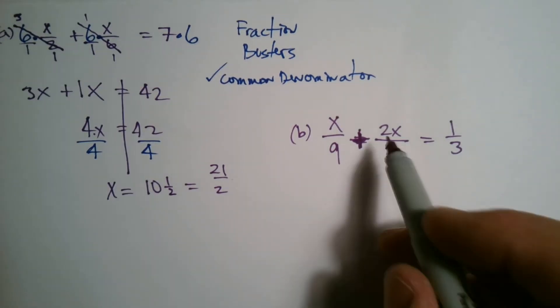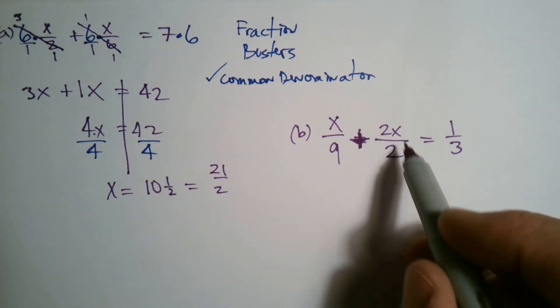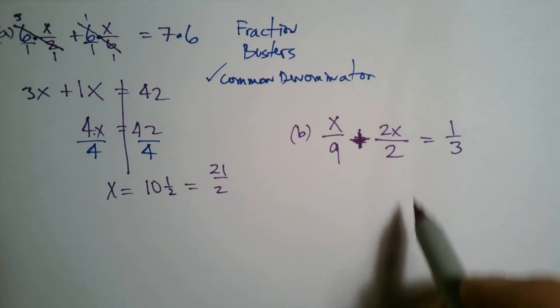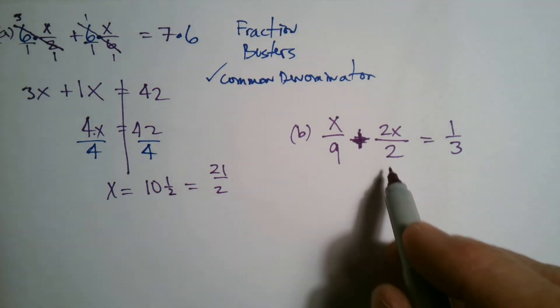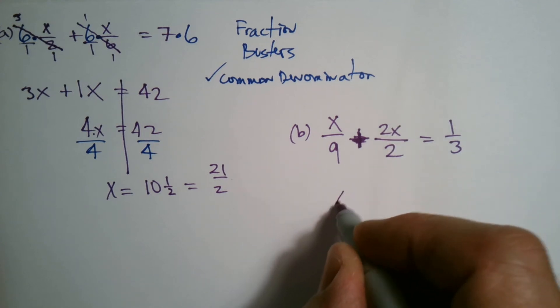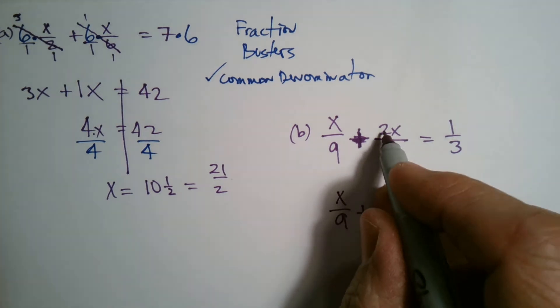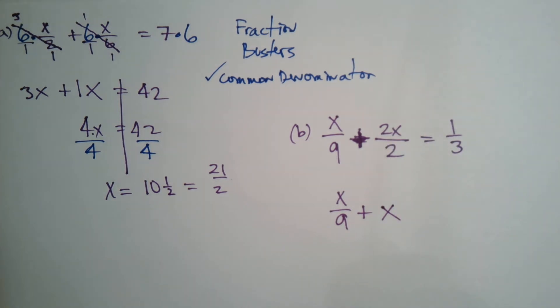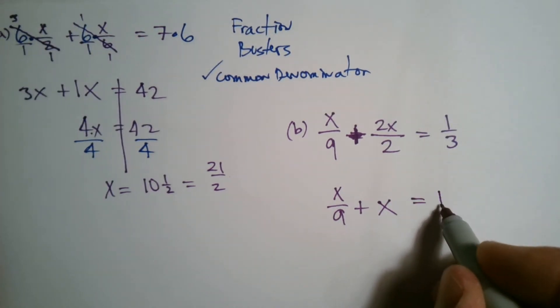This one's interesting because if I look, I actually could actually, before I even begin, simplify this and it would actually divide. I might do that just to be realistic and I can have a different fraction buster here. So this is x divided by 9 plus 2x over 2 is just x. The 2's divide out equals 1 third.